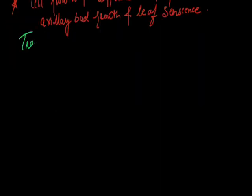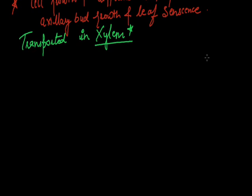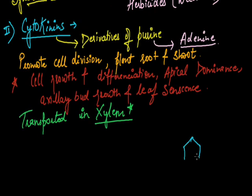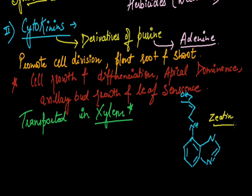Next, cytokinins are transported mainly in xylem. This is important. If we discuss the structure of cytokinin, these are also heterocyclic. As I have already told you, they are the derivatives of purine. It is a double ring structure. Cytokinin named zeatin. This is the name, natural cytokinin which is isolated from corn, Zea mays.